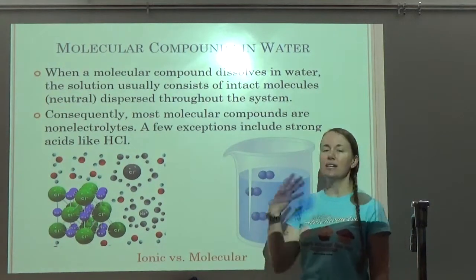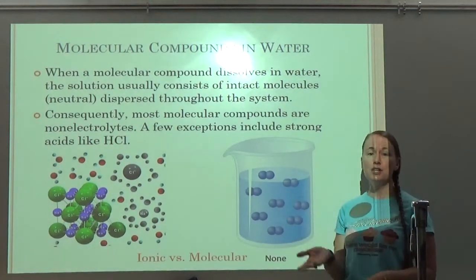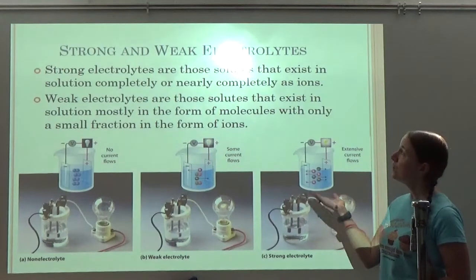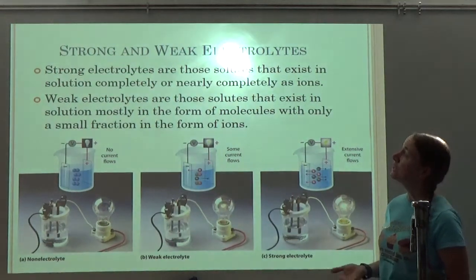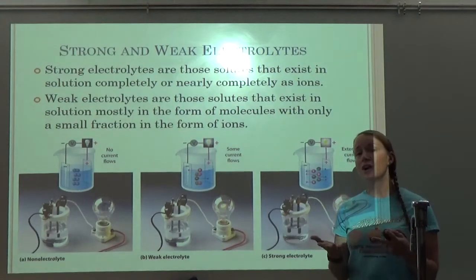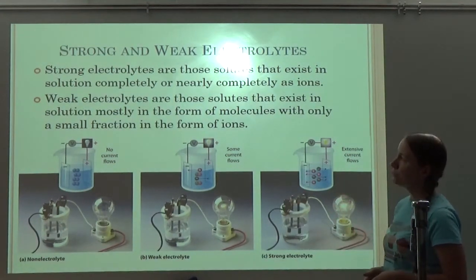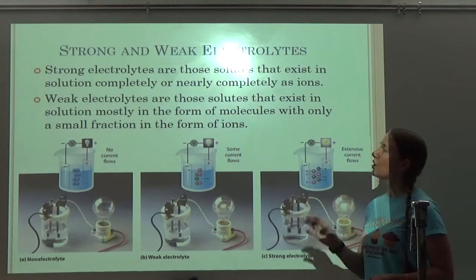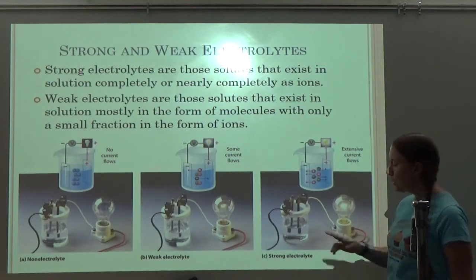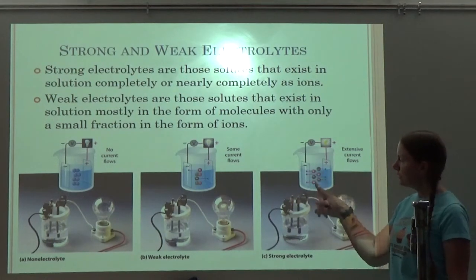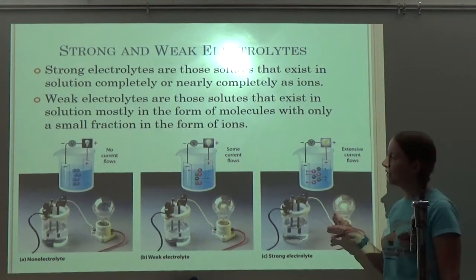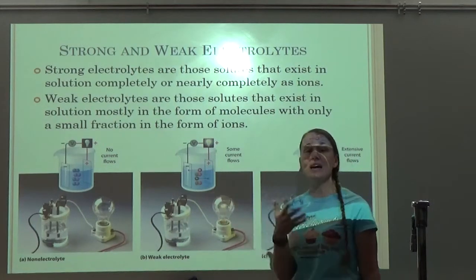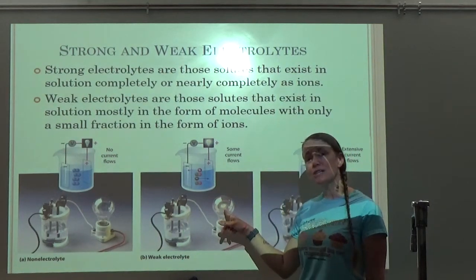Even though HCl is considered molecular, it's a strong acid, so it will break into H⁺ ions and Cl⁻ chloride ions. Strong electrolytes are those solutes that exist in solution completely or nearly completely as ions — strong electrolytes almost fully break apart in solution. Weak electrolytes are those solutes that exist mostly in the form of molecules with only a small fraction forming ions. A strong electrolyte — pretty much all of it will break apart and you'll get good electric current. A weak electrolyte would be like your weak acids and weak bases.